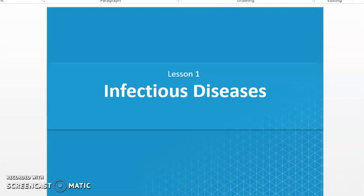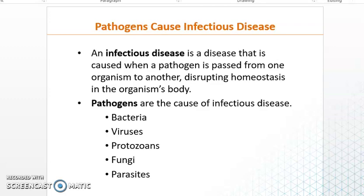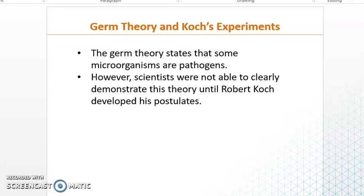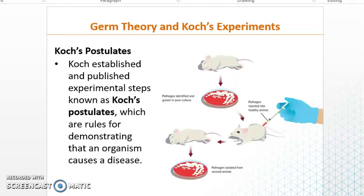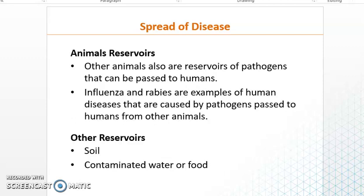Last three times we talked about what infectious disease is and what are pathogens. Then we talked about the germ theory and Koch's experiments, and what are the four postulates Koch used to establish and say about a microorganism that it causes a certain disease. Then we said for any disease to spread it requires two things: a reservoir and a way of spread. The reservoir can be human, animal, or even non-living objects.